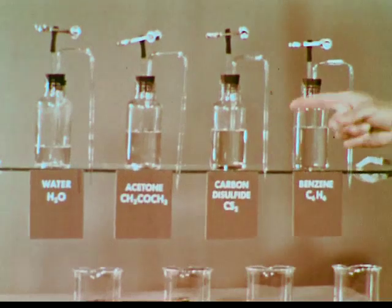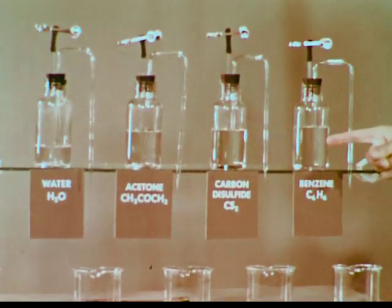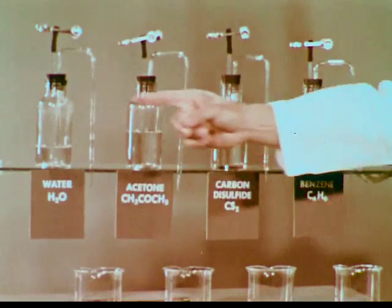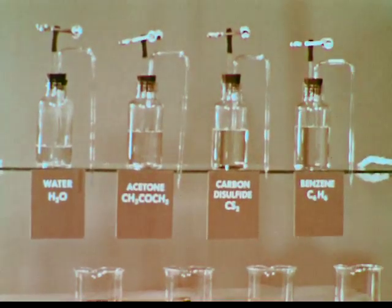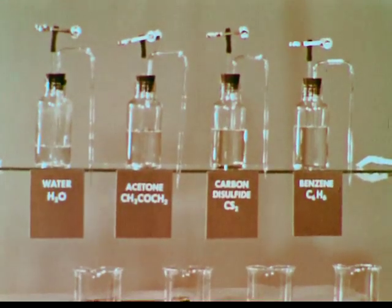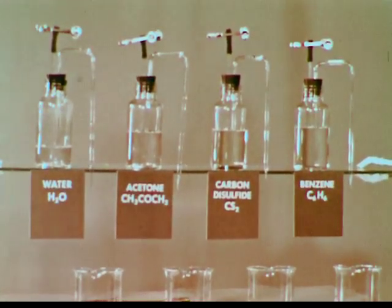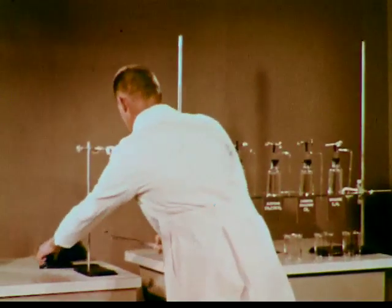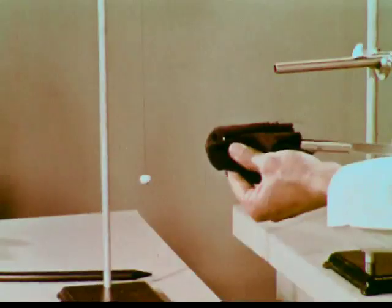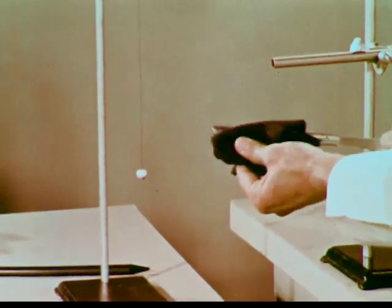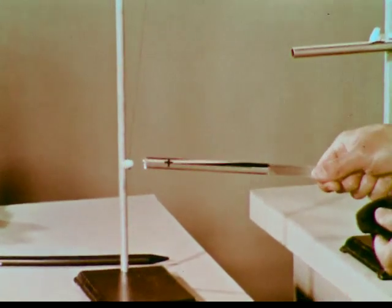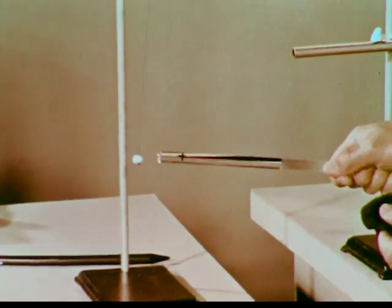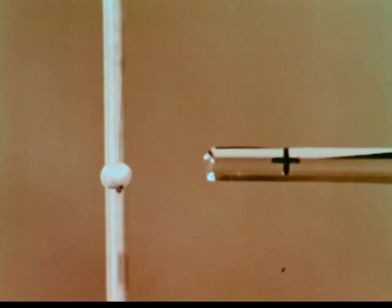Why does a negatively charged rod have no effect on carbon disulfide and benzene, and yet does deflect water and acetone? Is it possible that the streams which are deflected are charged positively, and the others are electrically neutral? If this is true, a positively charged rod should repel the deflected streams. A glass rod rubbed with silk repels our sphere. The glass rod is electrically positive, as shown by its repulsion of the positively charged sphere.